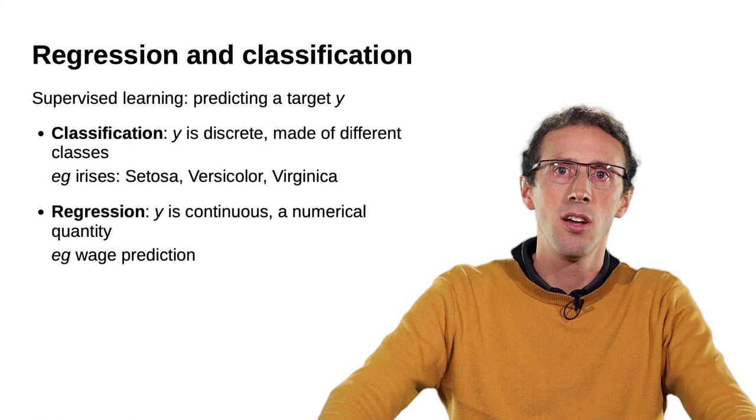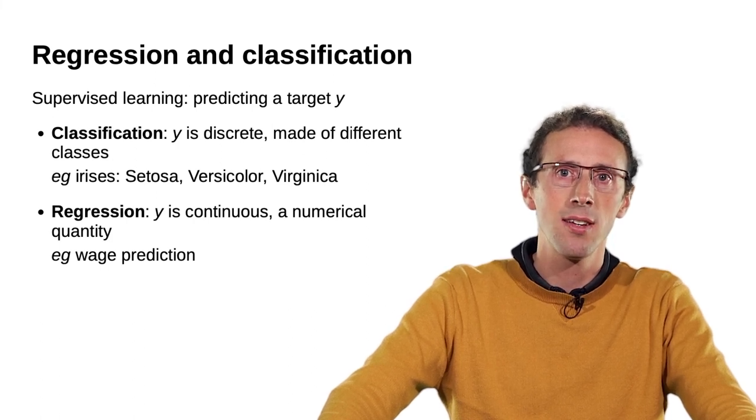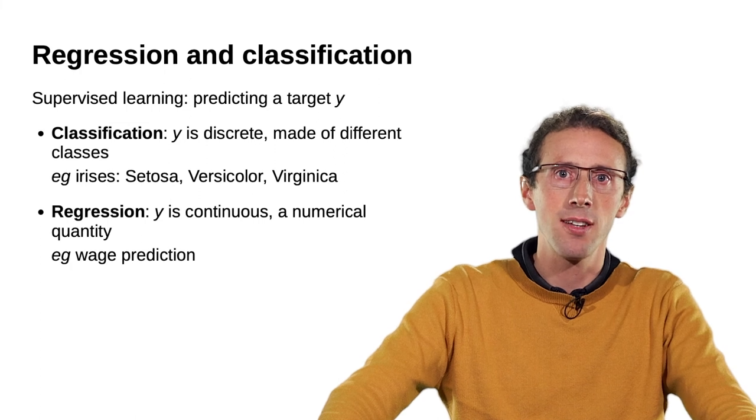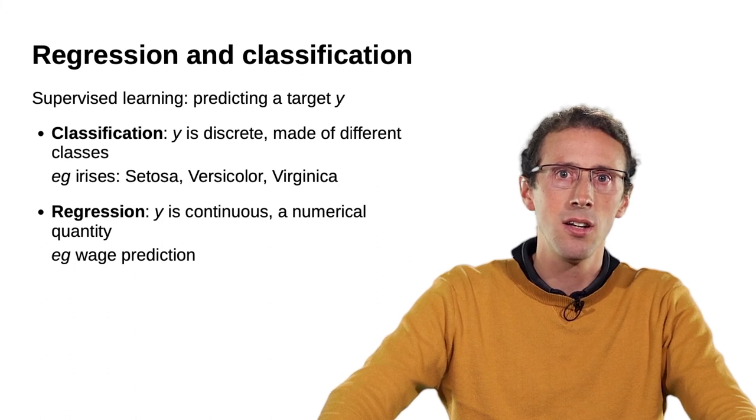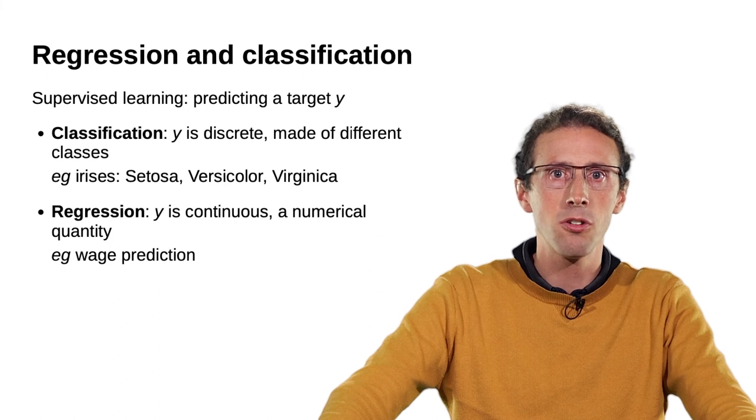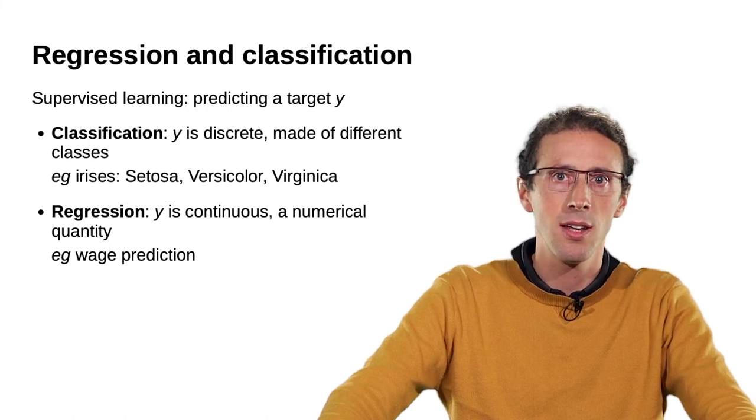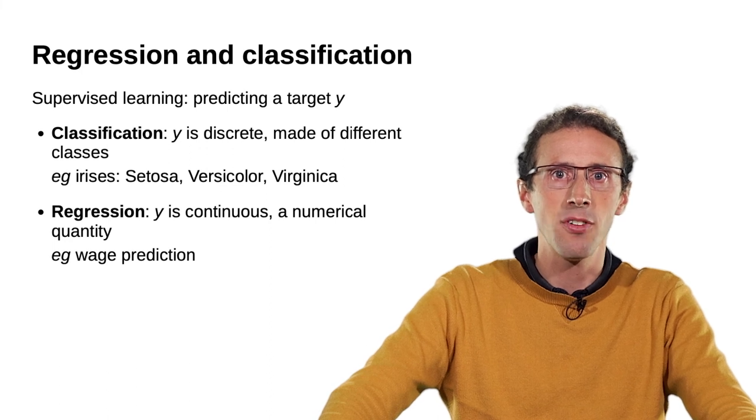Going back to supervised learning, we have to predict the target Y. This target is a property of our data. It may be discrete, describing different classes of the data. For instance, with irises, we are trying to predict the type of iris. In such a situation, we say that it is a classification task.